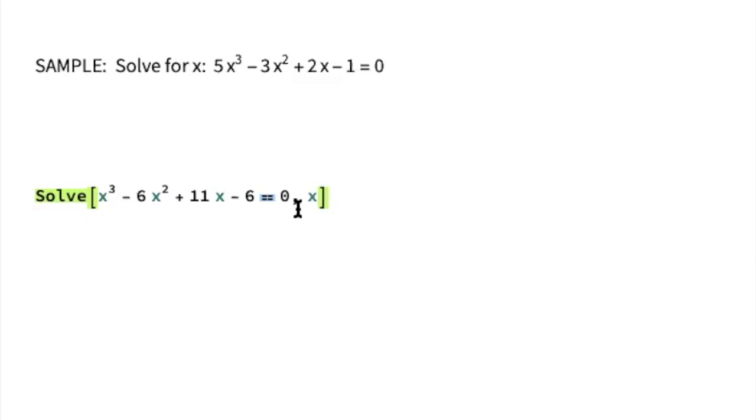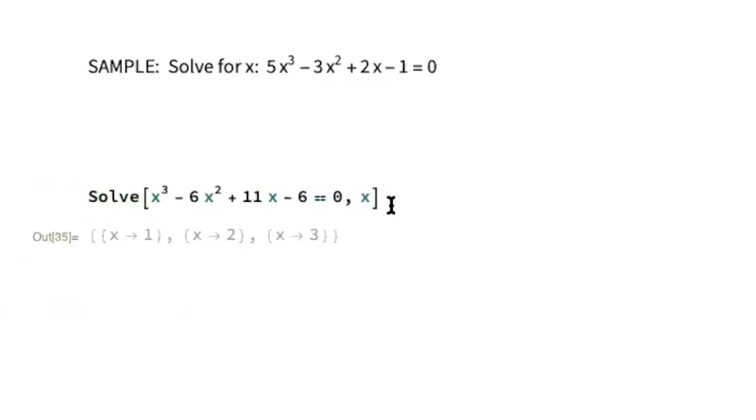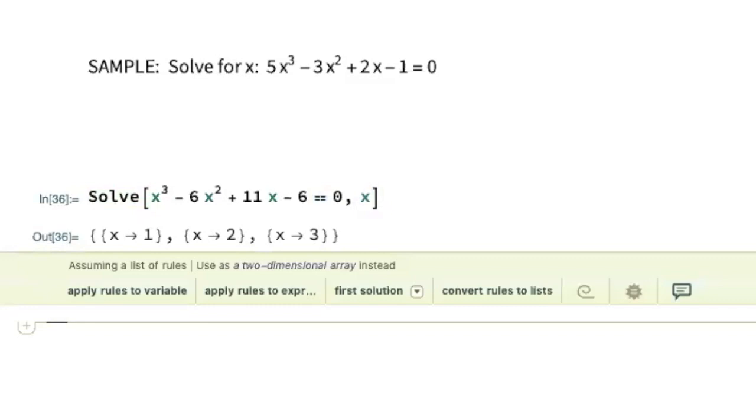After that, you put a comma, and you indicate which variable it is that you're looking to solve for. So in this case, we're solving for x. When I do a shift enter, you can see I've got my results here. What this is saying is that there are three values of x that make this particular equation true, which are 1, 2, and 3.